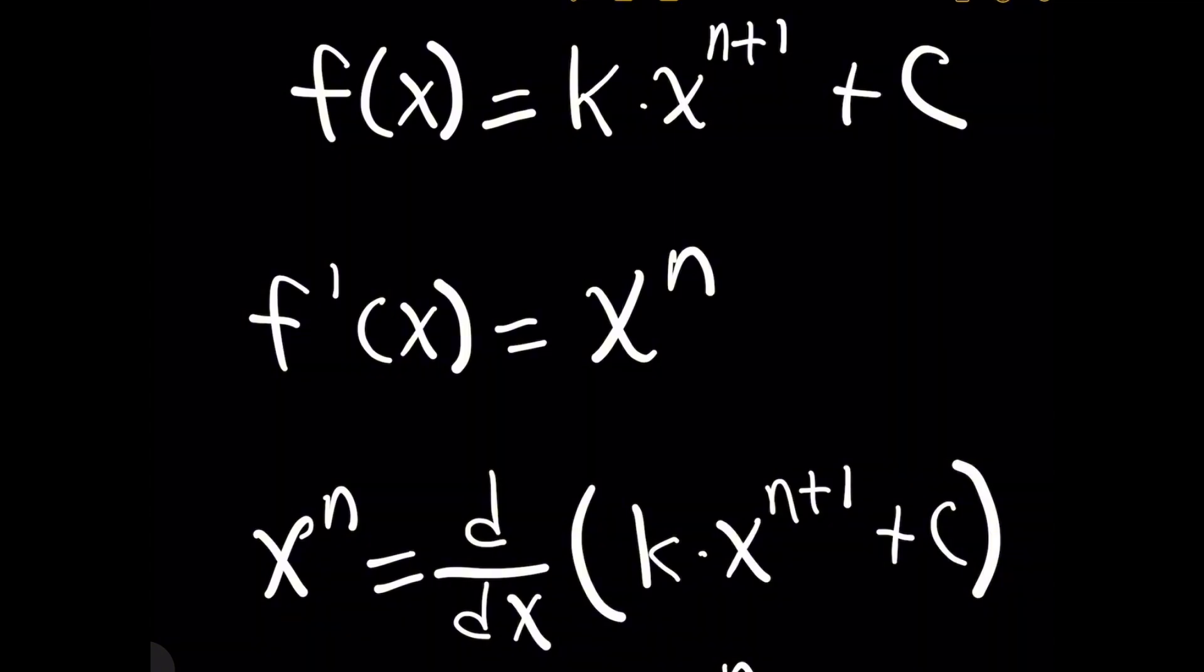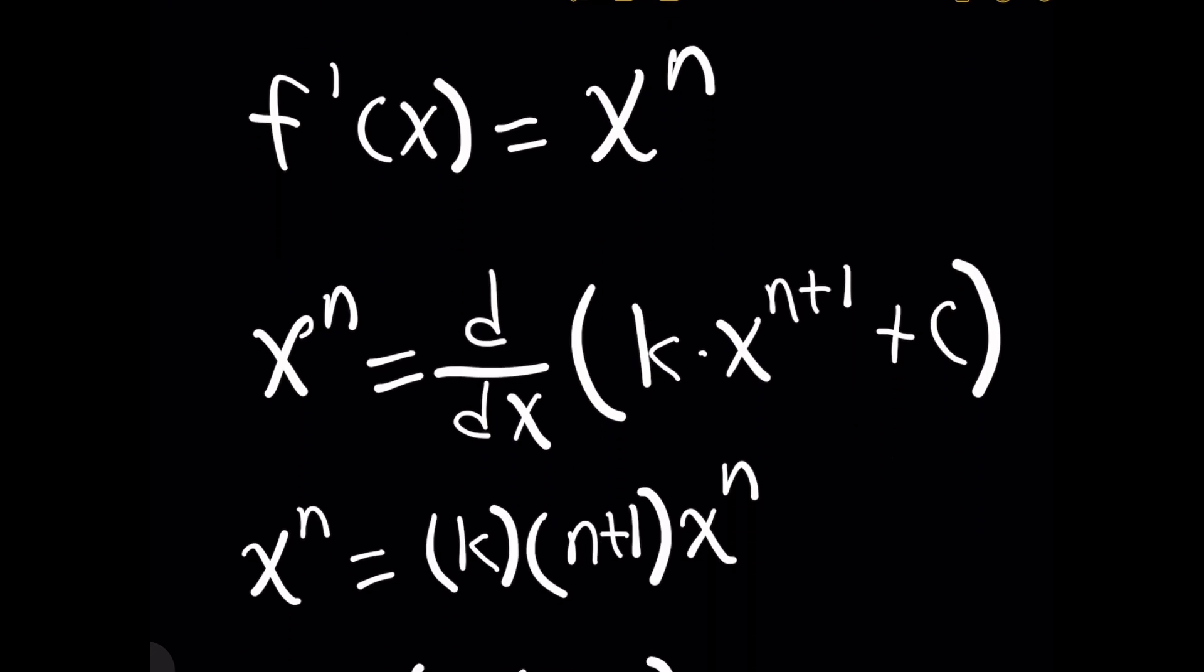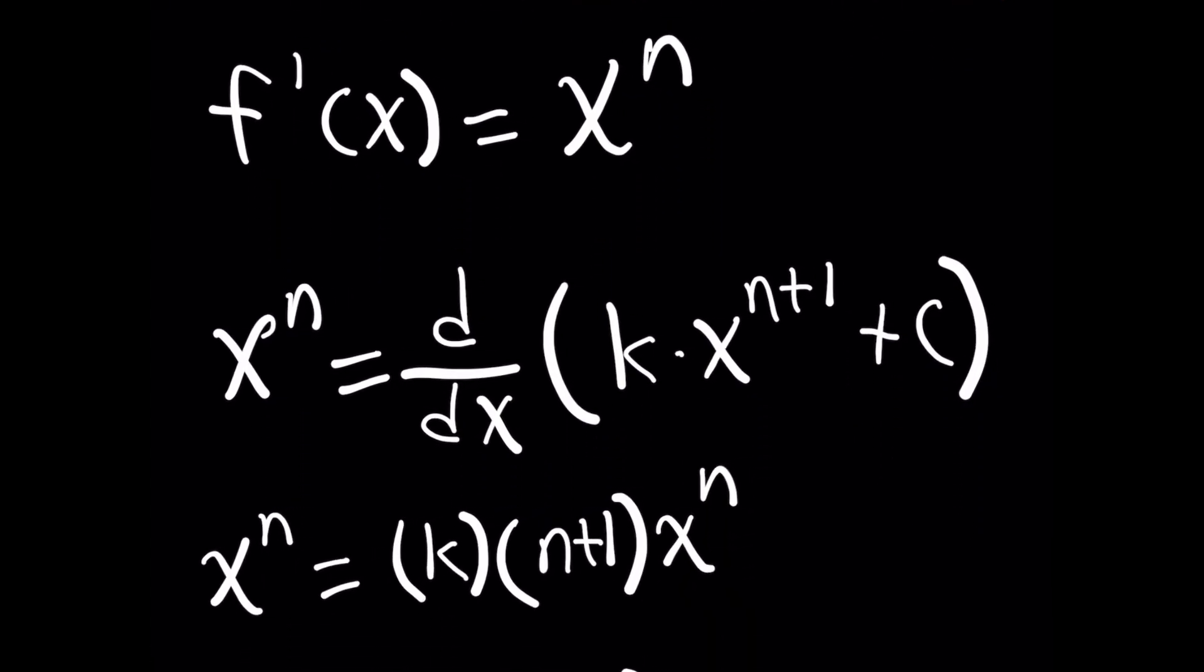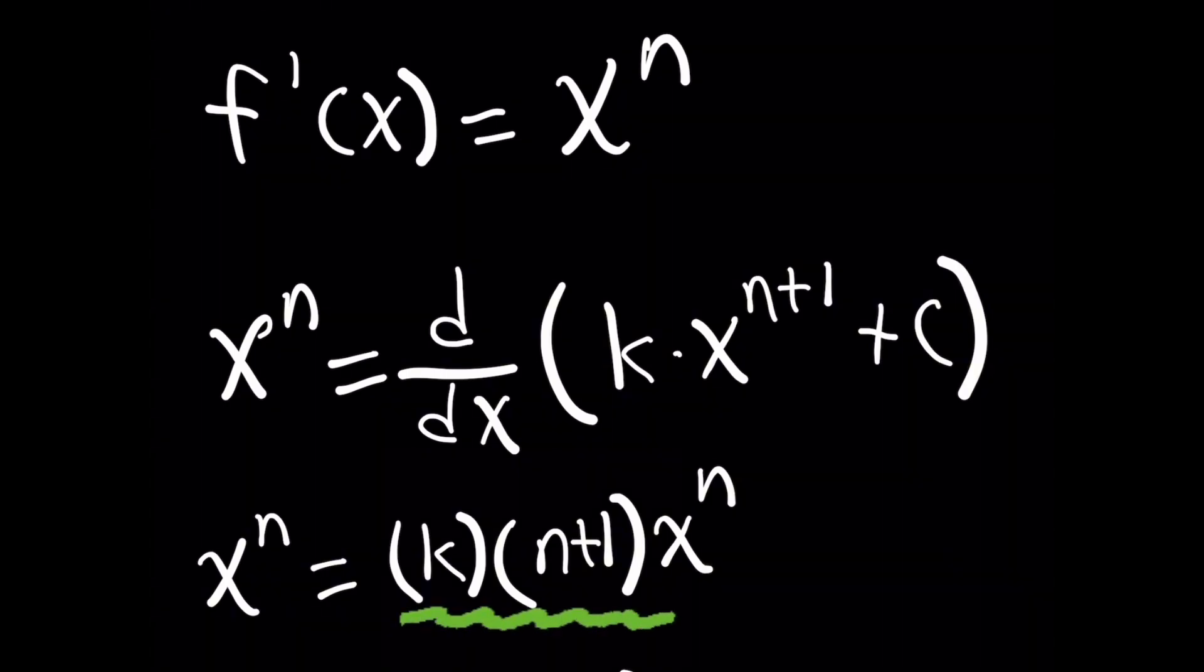All right. So if f prime of x, the derivative of f of x is x to the n, that also must mean then that you get that when you take the derivative with respect to x of f of x, which is this k times x to the n plus 1 plus c, right? And if you remember with derivatives, the constant, that c will go away. And then because you're taking a derivative of a polynomial, you take its original power, which is n plus 1, you bring it in front as a multiple, and then you reduce the power by 1. Oh, but check this out, right? Now you've got x to the n on both sides of the equation.